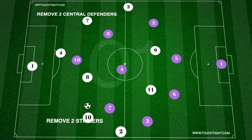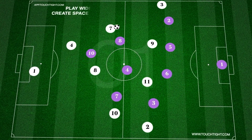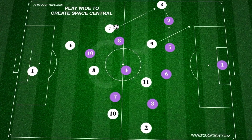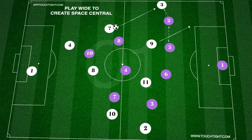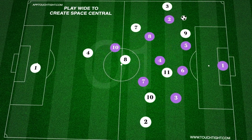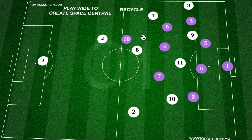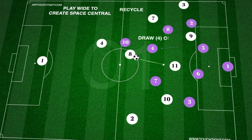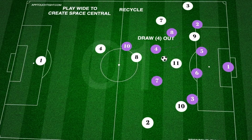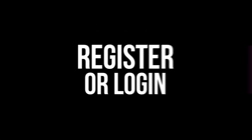In a medium-sided game based on attacking in a 3-5-2 against a familiar 4-3-3, we remove two central defenders for attackers and two wingers from the defending team to leave a 9v9. We look to play wide, moving the opposition to create space in central areas.